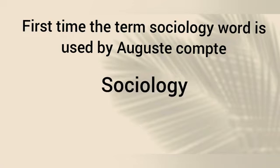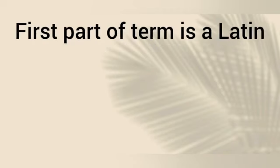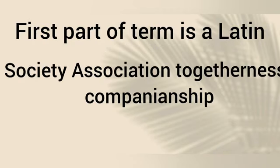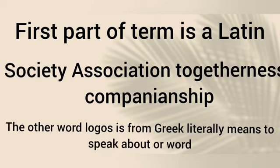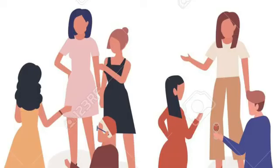Comte coined the term Sociology — it is a combination of two words. The first part of the term is a Latin word that variously means society, association, togetherness or companionship. The other word, Logos, is of Greek origin. It literally means to speak about or word. However, the term is generally understood as study or science. Thus, the etymological, literal definition of Sociology is that it is the word or speaking about society.